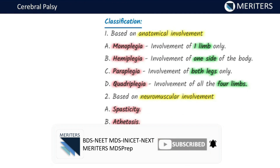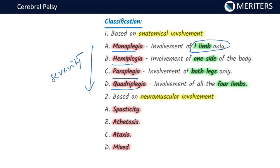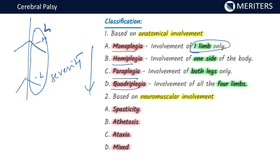Classification based on anatomical involvement: it is classified as monoplegia, hemiplegia, paraplegia, and quadriplegia depending upon the severity. Monoplegia involves one limb only — one hand or one leg. Hemiplegia involves one side of the body, such as the left side hand and left side leg, or the right side. Paraplegia involves both the legs only. Quadriplegia is the most severe form where there is involvement of all four limbs of the body.